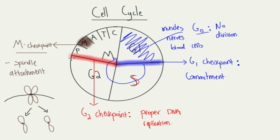Remember, there are three checkpoints and they're all important. G1 is your commitment checkpoint. G2 makes sure the DNA was replicated properly. And the M checkpoint makes sure that everything in mitosis is going smoothly and that the spindles have attached to chromosomes properly.